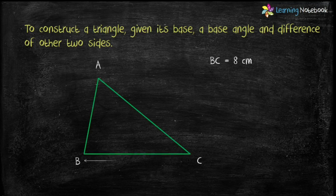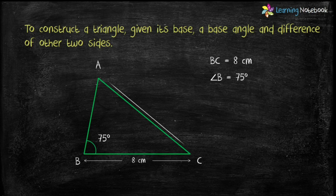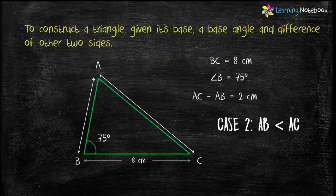Now let's see the second case. If in a construction question we are given base BC, angle B as the base angle, and AC minus AB equals 2 centimeters, then it will be Case 2, which is the construction when AB is less than AC. In such questions, the triangle will look as shown here.